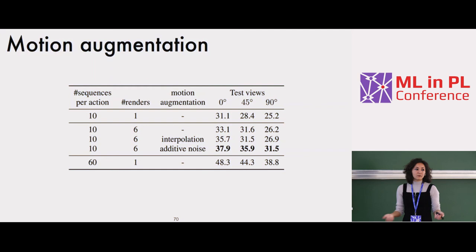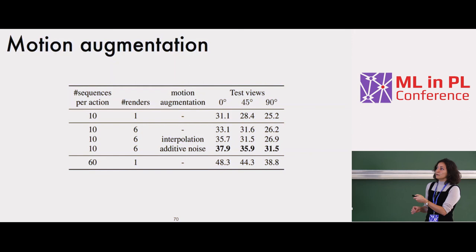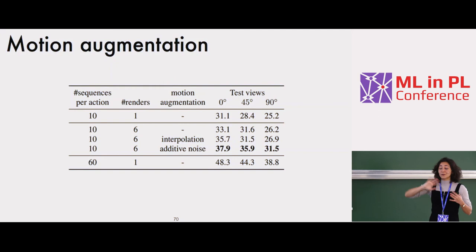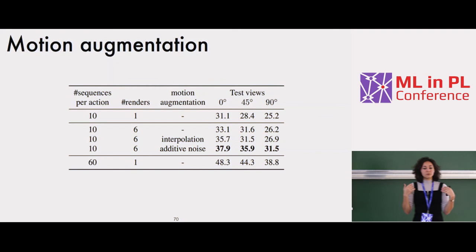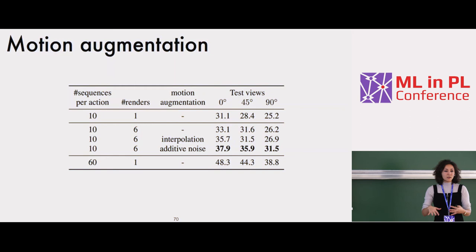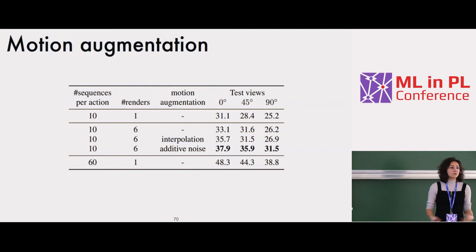We experiment with different ways of increasing motion diversity. One is additive noise — changing the angles between joints slightly without disturbing too much, otherwise hand waving and brushing teeth would become similar. The other is interpolation: aligning two sequences of the same action class in time and interpolating between them to create a new one. For example, two sitting-down sequences with different arm positions give something in between. Interpolation worked to some extent, but additive noise worked better and is also simpler to implement.